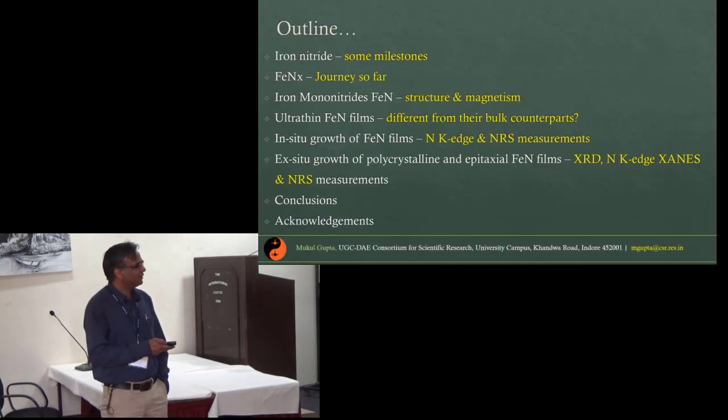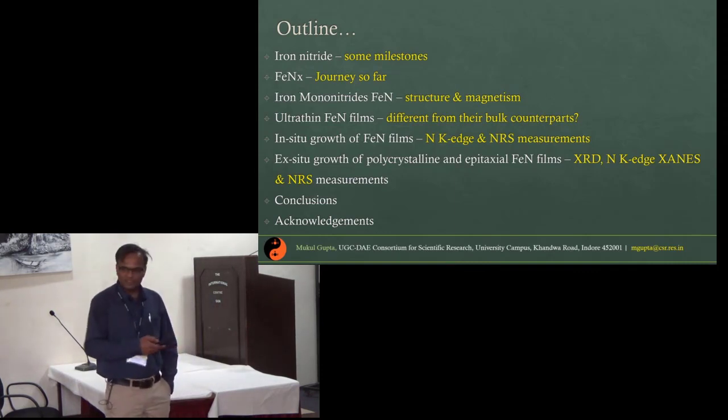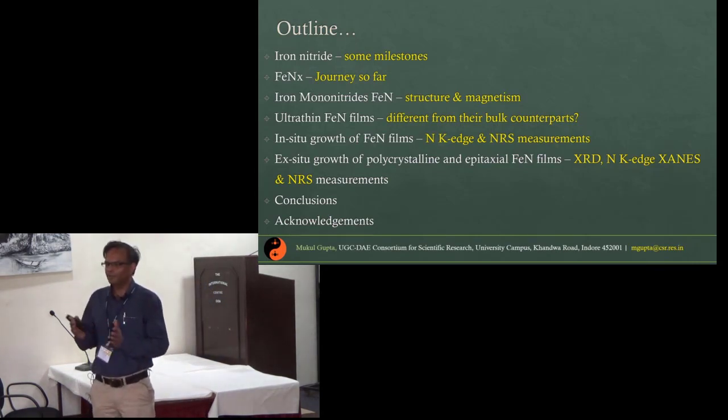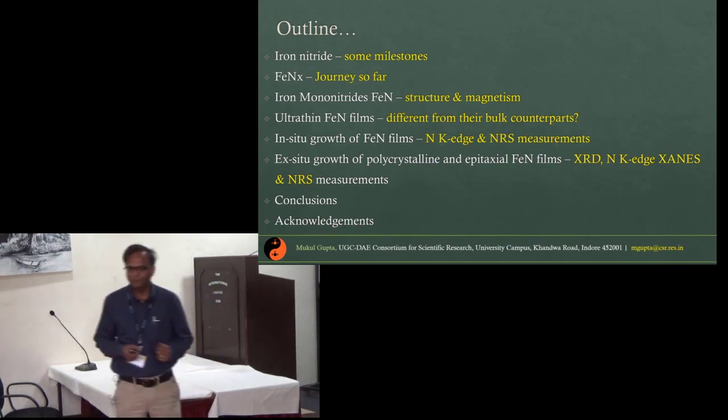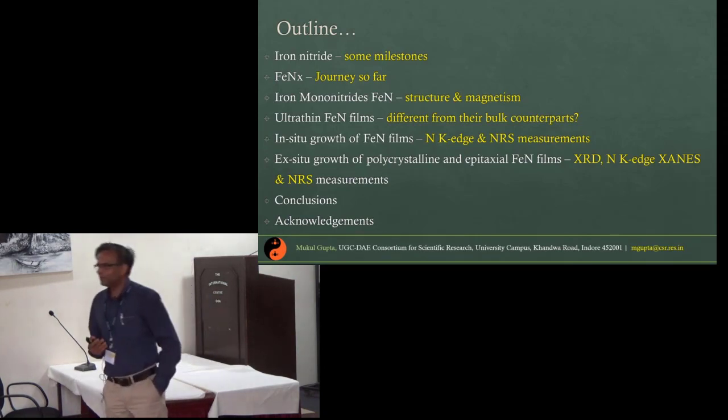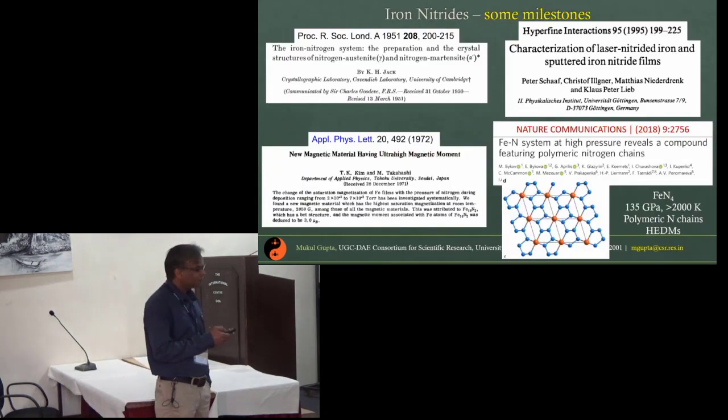In this presentation I will follow this outline: I will introduce the iron nitrides in general, then talk about especially iron mono-nitride phase which is when iron and nitrogen both are in 1 to 1 atomic ratio. There are some debates about the structure as well as the magnetic ground state of this compound, so we will address those issues.